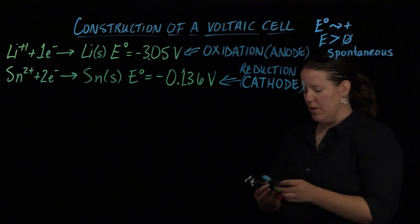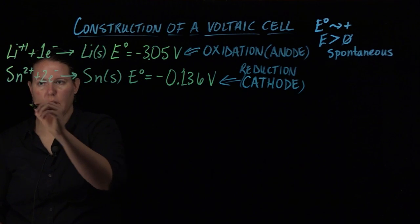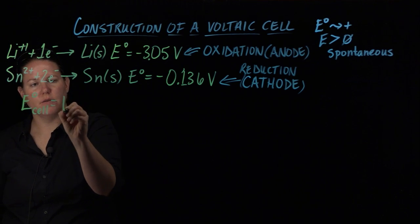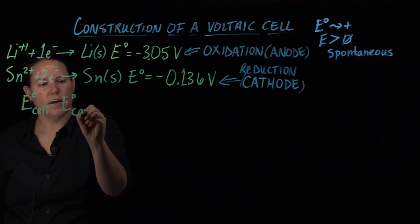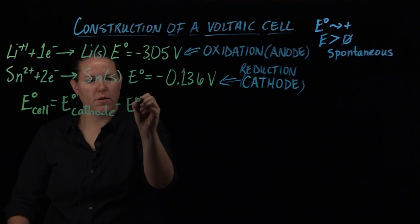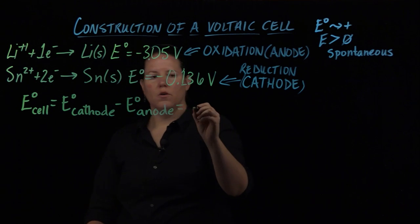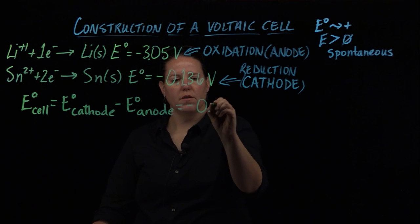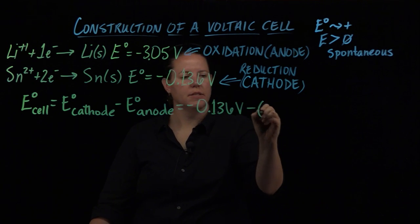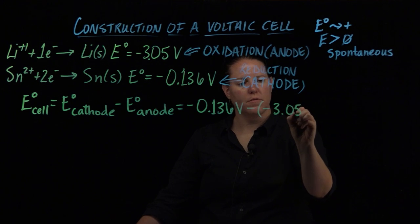We could do some calculations with that. We could already, just by labeling this, calculate the E° cell. The E° cell is equal to E° cathode minus E° anode. Now that I've labeled these two, I could do that almost immediately.